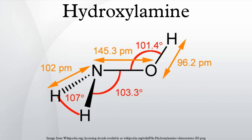NH2OH can be produced via several routes. The main route is via the Raschig process, in which aqueous ammonium nitrite is reduced by HSO3 and SO2 at 0°C to yield a hydroxylamide O,N,N-disulfonate anion.